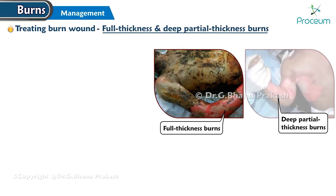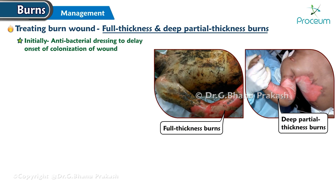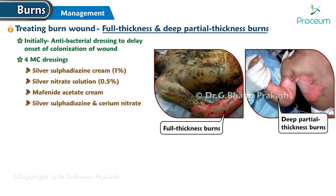Full thickness and deep partial thickness burns should initially be dressed with an antibacterial dressing to delay the onset of colonization of the wound. The four most common dressings for these wounds are: silver sulfadiazine cream, silver nitrate solution, mafenide acetate cream, and silver sulfadiazine with cerium nitrate.